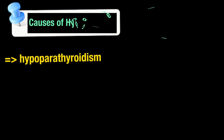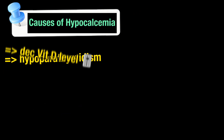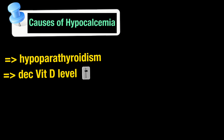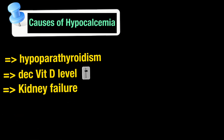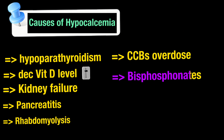The causes of hypocalcemia: hypoparathyroidism is the most important cause, in which PTH production becomes decreased. Hypoparathyroidism may be due to removal of the thyroid gland, in which the parathyroid gland is also removed. The second most common cause is decreased vitamin D level.